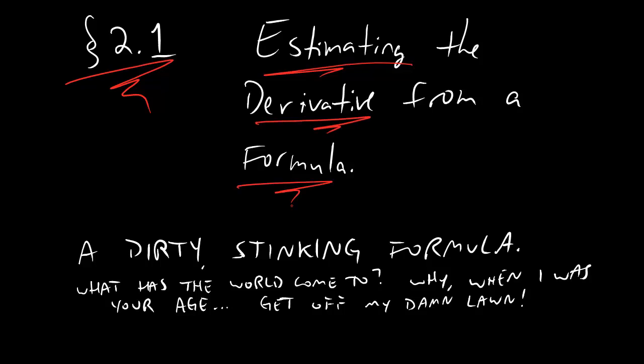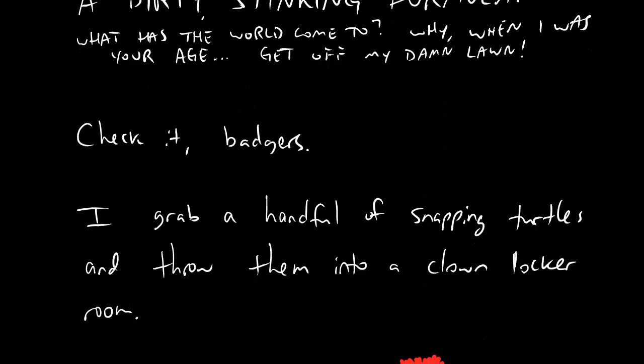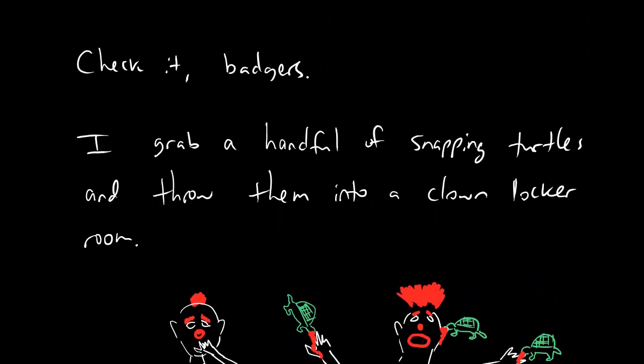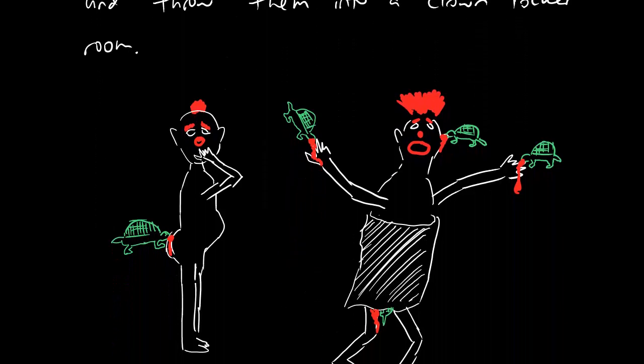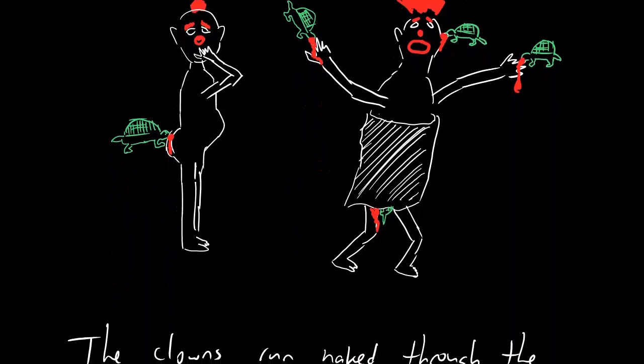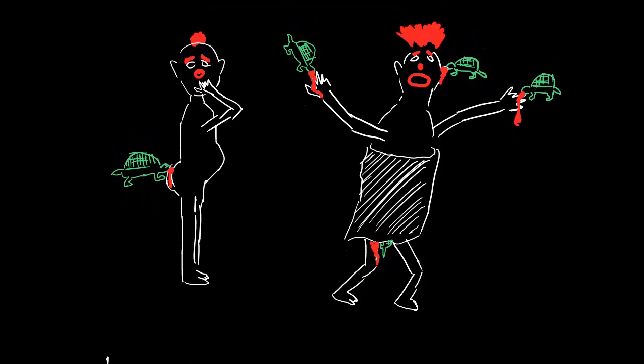And what kind of formula you ask? Well it's a dirty stinking formula. Alright, so check it dudes. I grab a handful of snapping turtles and I throw them into a clown locker room. And the result might look a little something like this. Now if you're wondering what these clowns are thinking, this one in particular is thinking the following. Oh my.